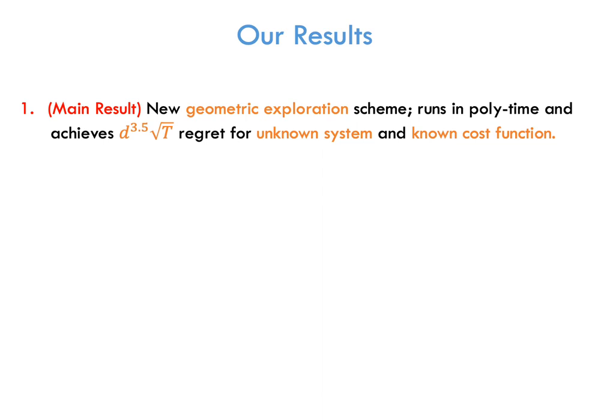Our first and main result is a new geometric exploration strategy that runs in polynomial time and achieves d to the 3.5 times root t regret for a known system and known cost function. This resolves the question that I described previously.